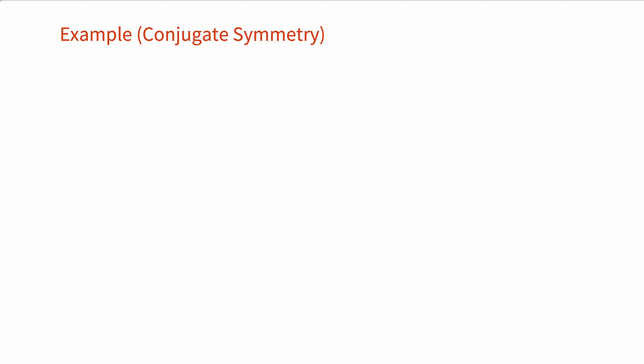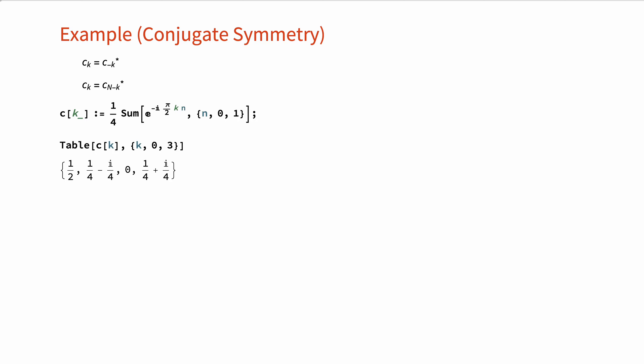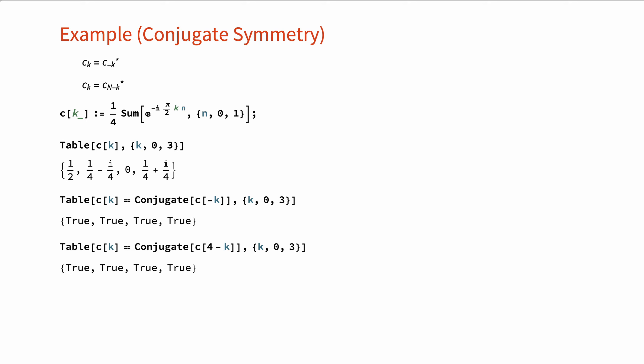The discrete time Fourier series coefficients of a real periodic sequence are conjugate symmetric, as shown here. However, due to the fact that they are also periodic, the conjugate symmetry property additionally manifests itself in a further form as shown. We can check the first property for our first example — it is satisfied — and also show the second property holds, with both sides of the equation being equal.